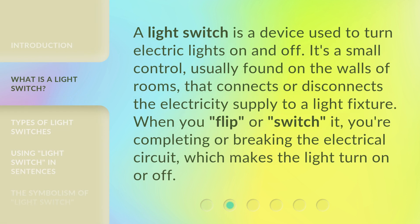A light switch is a device used to turn electric lights on and off. It's a small control, usually found on the walls of rooms, that connects or disconnects the electricity supply to a light fixture. When you flip or switch it, you're completing or breaking the electrical circuit, which makes the light turn on or off.